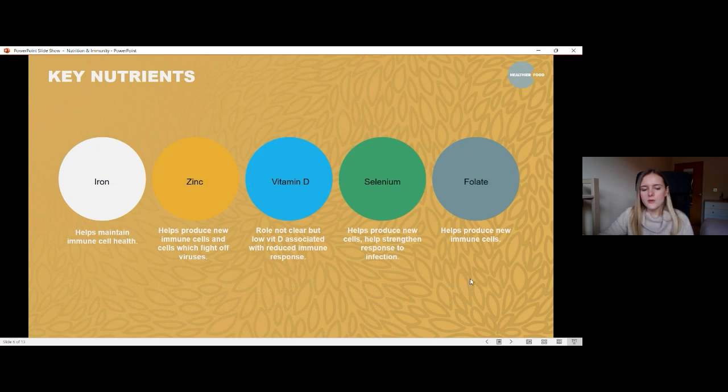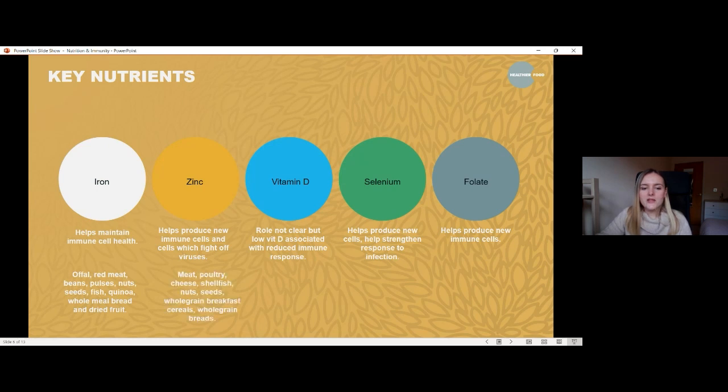And on to the next page. So I've just included a few more as well. Iron helps maintain immune health. Zinc helps produce new cells as well and also helps us to fight off viruses. Vitamin D is an interesting one, which I'll also mention in some of the future slides as well. So its role is not clear at the moment, but typically people who have a low vitamin D level have a reduced immune response. So it seems to be linked somehow. Selenium helps produce new cells, helps to strengthen our response to infection, and folate helps to produce new cells as well.